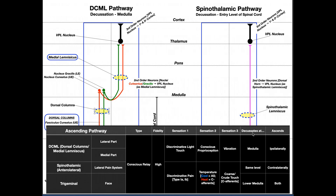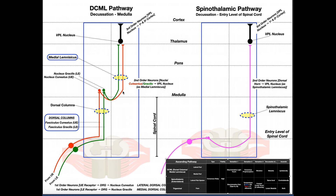The other key things to remember: the pathway decussates at the medulla — that's where it crosses over. The DCML also ascends ipsilaterally, meaning it travels up the spinal cord on the same side it entered the nervous system. Because it enters on the patient's right and ascends on the right before crossing at the medulla, it is an ipsilateral pathway. By contrast, the spinal thalamic pathway is contralateral because it crosses at the level of the spinal cord.